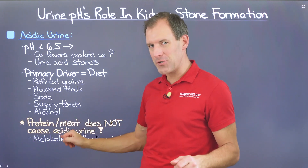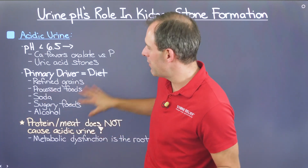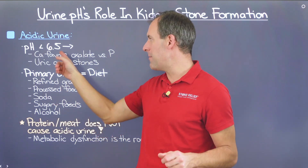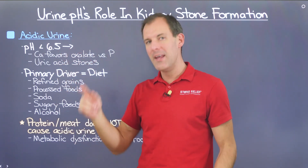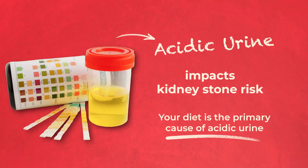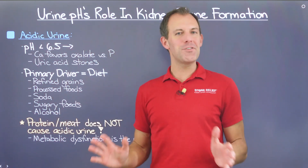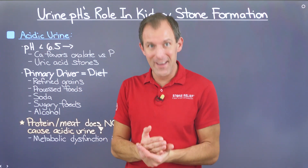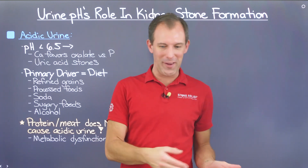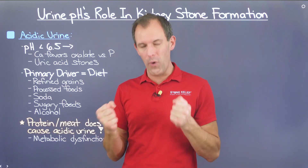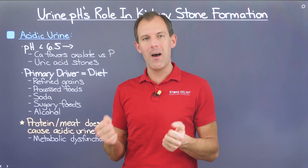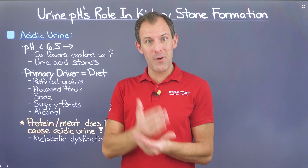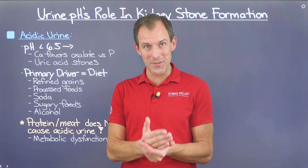Metabolic dysfunction, primarily driven by diet, is the root of any type of calcium oxalate or uric acid kidney stone, because the urine environment is acidic. Making changes to your diet is not an easy task — I literally spent a decade experimenting, failing, and trying different variables to understand what impact I could have on my kidney stone formation. And I have successfully figured out this puzzle to solve kidney stones once and for all.